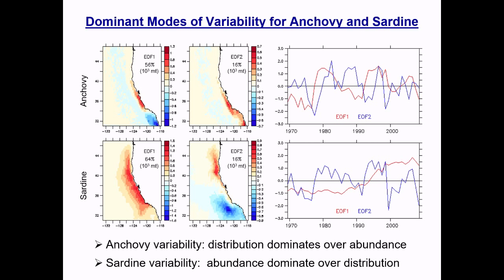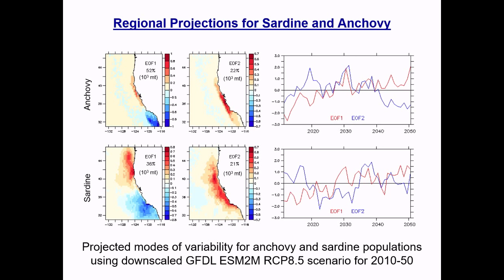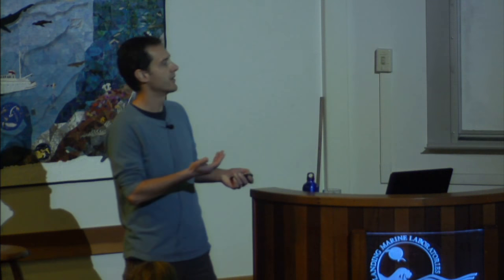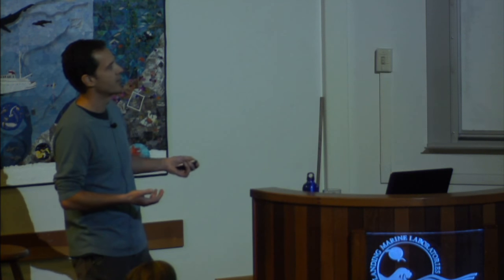We pushed this further by downscaling a climate model solution projecting from 2000 to end of century. By 2050, for sardines the dominant mode of temporal variability shifts — a north-south shift in distribution becomes primary, with change in abundance secondary. Anchovies still show distribution change as dominant. Under warming climate conditions in the California Current, both species would shift their range northward. This is part of a current project with NOAA Fisheries in Monterey, working toward more rigorous climate projection downscaling.